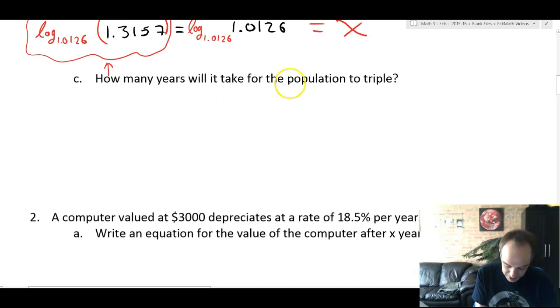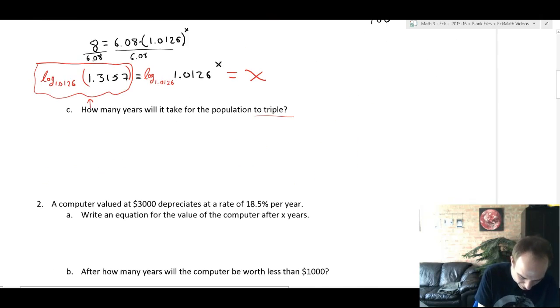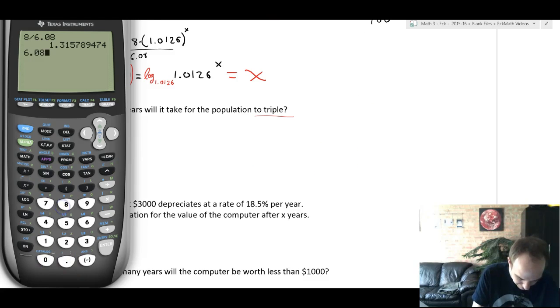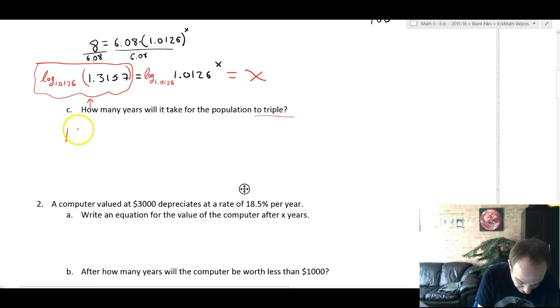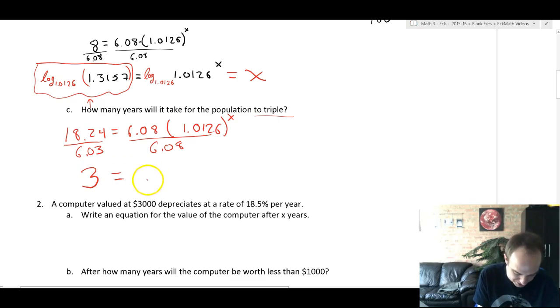Part C is how many years will it take for the population to triple? So 6.08 is the original population so to figure out the tripling I can do that number times 3 and get 18.24 and then we'll set up the similar equation: 18.24 equals 6.08 times 1.0126 to the x. Now a really cool thing is gonna happen when I divide both sides by 6.08. Because the 18.24 came from multiplying 6.08 times 3, then this side is just gonna become 3. So the 3 here is tripling. I get 3 equals 1.0126 to the x.